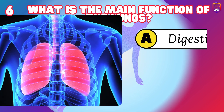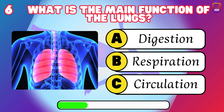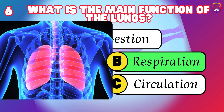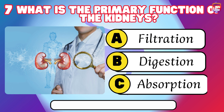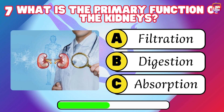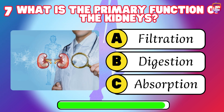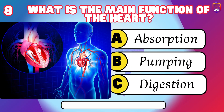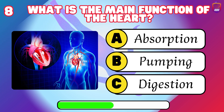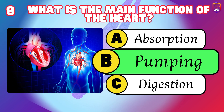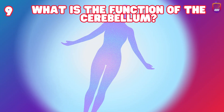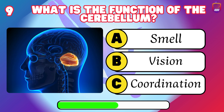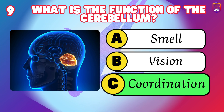What is the main function of the lungs? Respiration. What is the primary function of the kidneys? Filtration. What is the main function of the heart? Pumping. What is the function of the cerebellum? Coordination.